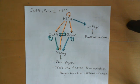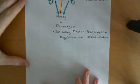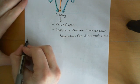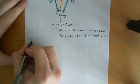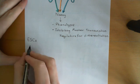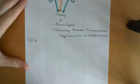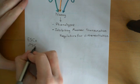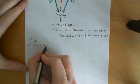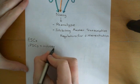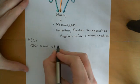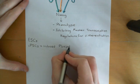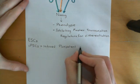Now we're in a position to talk about induced pluripotent stem cells. Just a few abbreviations: ESCs means embryonic stem cells. iPSCs — with a lowercase 'i' and uppercase 'PSCs' — means induced pluripotent stem cells.